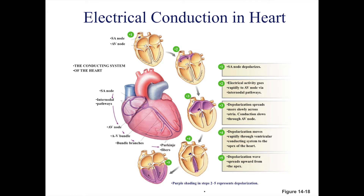Here is a diagram showing how the electrical conduction relates to the contraction of the heart. First, the SA node depolarizes. The electrical activity goes rapidly to the AV node through the internodal pathways. Depolarization follows more slowly, contracting the atria. The conduction slows through the AV node, but depolarization moves rapidly down the ventricles to the apex of the heart. The depolarization then moves upward, contracting the ventricles.